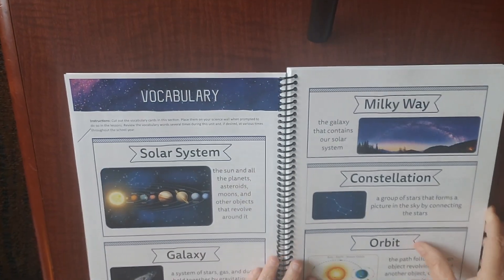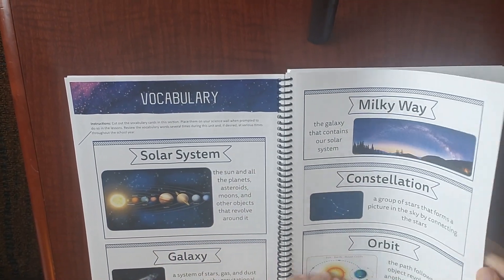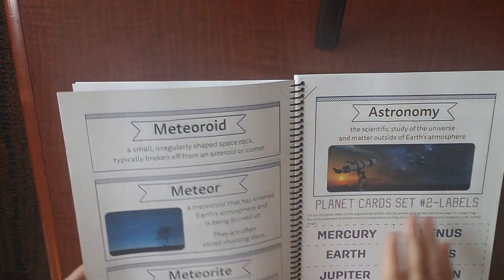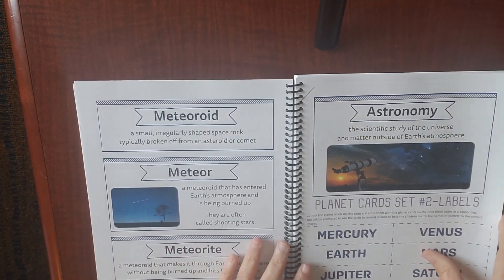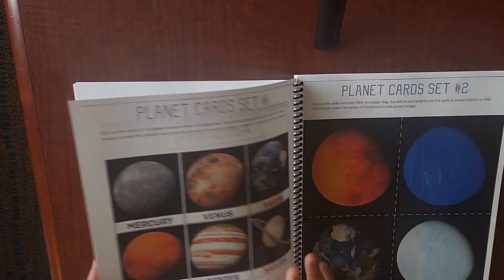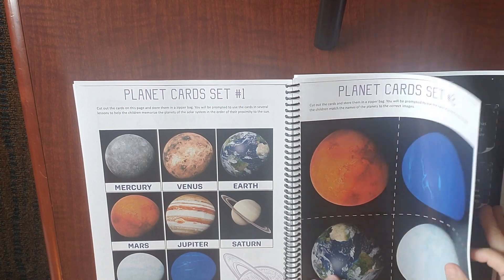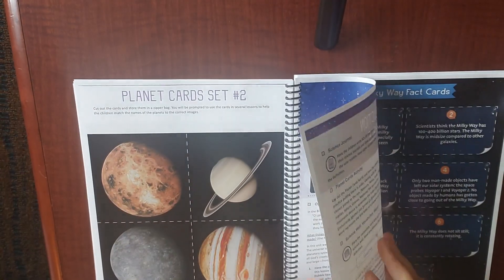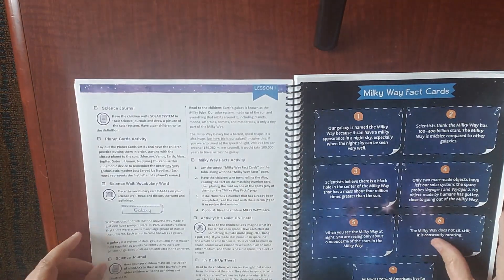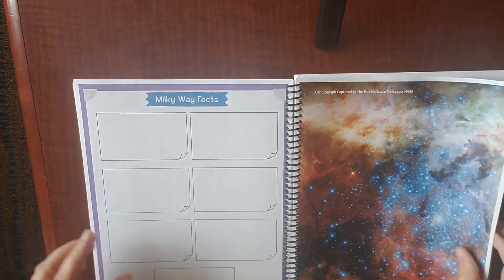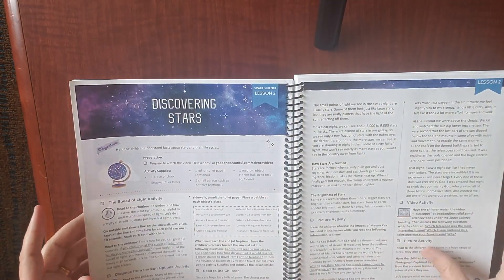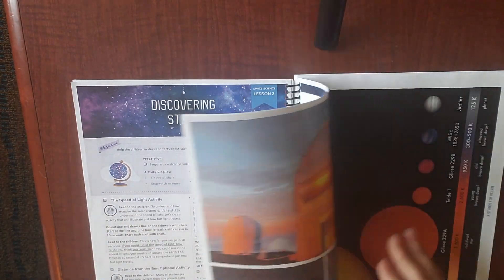The Good and the Beautiful does have these vocabulary cards which are beautiful, and they recommend having a space wall. You also have planet cards and fact cards as well. There are just amazingly beautiful pictures included in the Good and the Beautiful.